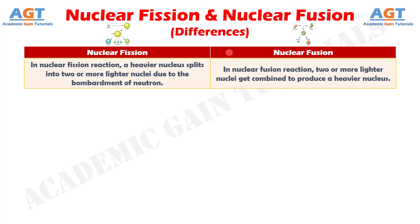Difference number one: in a nuclear fission reaction, a heavier nucleus splits into two or more lighter nuclei due to the bombardment of a neutron. Whereas in a nuclear fusion reaction, two or more lighter nuclei get combined to produce a heavier nucleus.